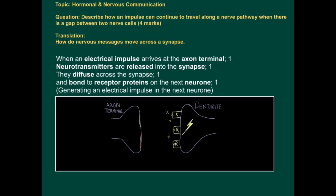And this will generate an electrical impulse in the next neuron. The question is only for four marks so these are the four mark worthy points.